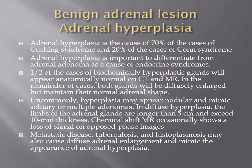Adrenal hyperplasia is a cause of Cushing syndrome in 70% and Conn's syndrome in 20%. It is important to differentiate between adrenal adenoma and hyperplasia. Half of cases of adrenal hyperplasia show normal MRI and CT studies. Uncommonly, hyperplasia may appear nodular and mimic solitary or multiple adenomas. In diffuse hyperplasia, the adrenal gland length exceeds 5 cm and the thickness exceeds 10 mm. Chemical shift MRI occasionally shows loss of signal on opposed phase. Metastatic disease, tuberculosis, and histoplasmosis may cause diffuse adrenal enlargement mimicking hyperplasia.